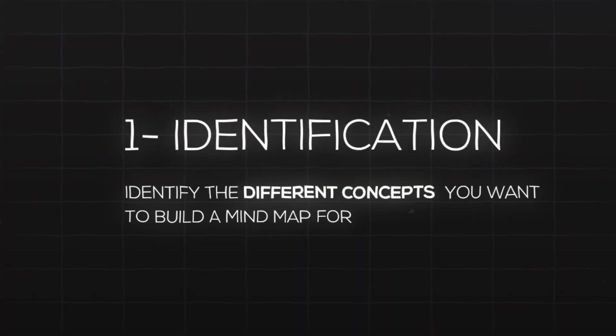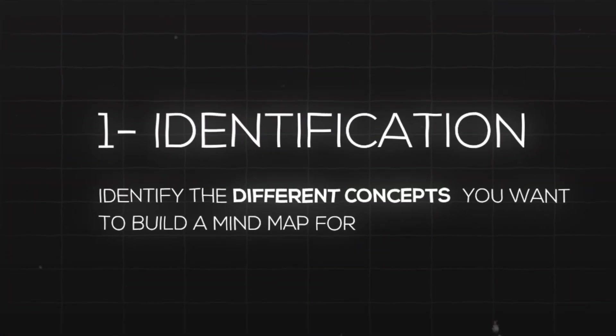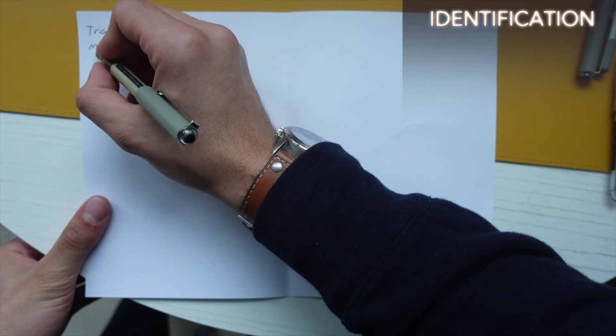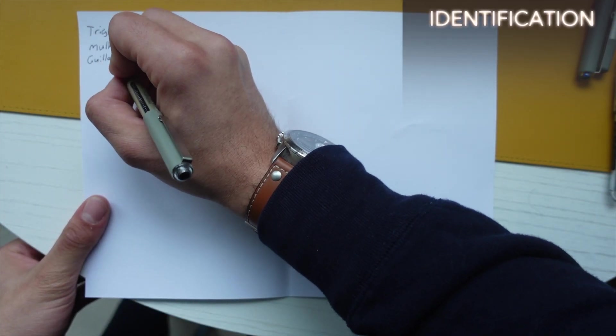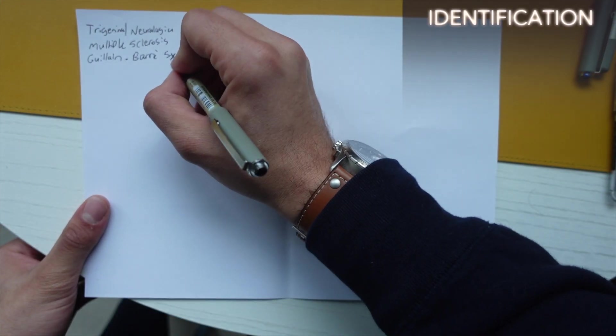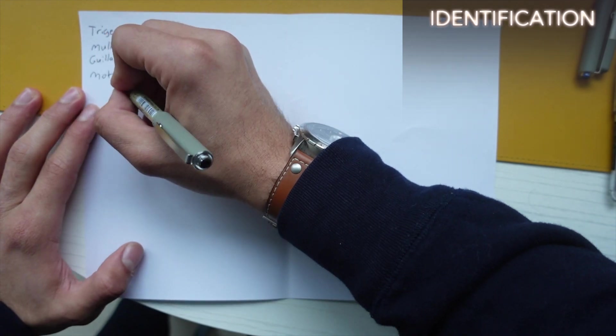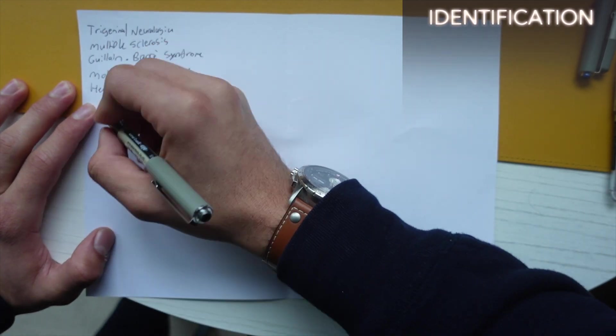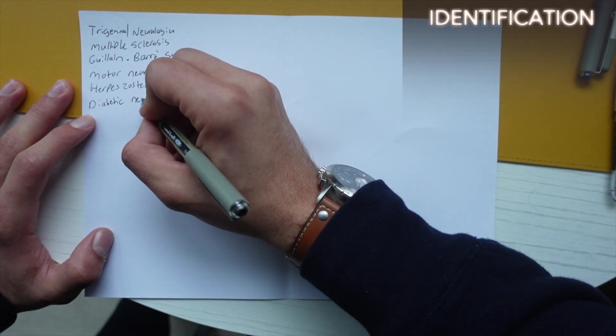First: identification. You want to begin by identifying the distinct aspects of what you're trying to build connections for — in this case, the six neurological conditions. This step provides clarity by establishing a clear set of elements that you're dealing with.